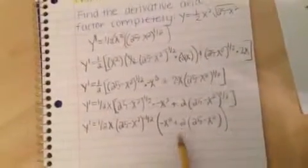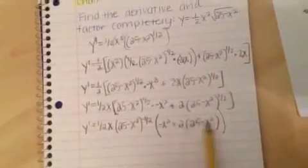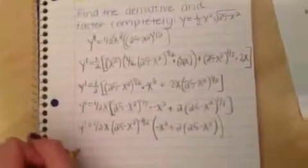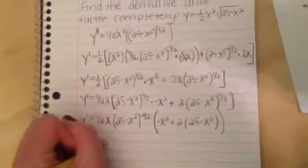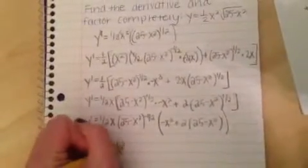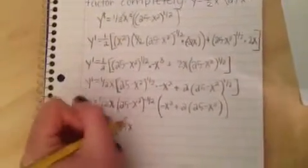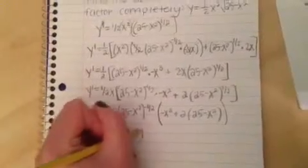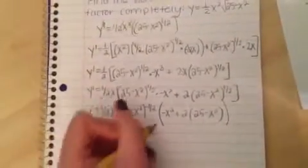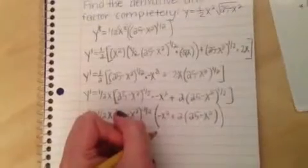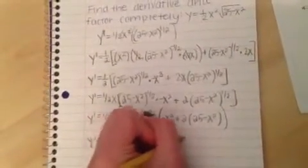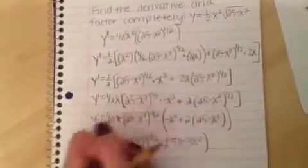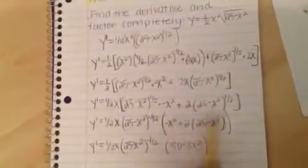Alright. Now we just need to distribute these. So y prime equals half x, 25 minus x squared negative one-half, and this becomes 50 minus 3x squared once you distribute each one. This is what it comes out to be.